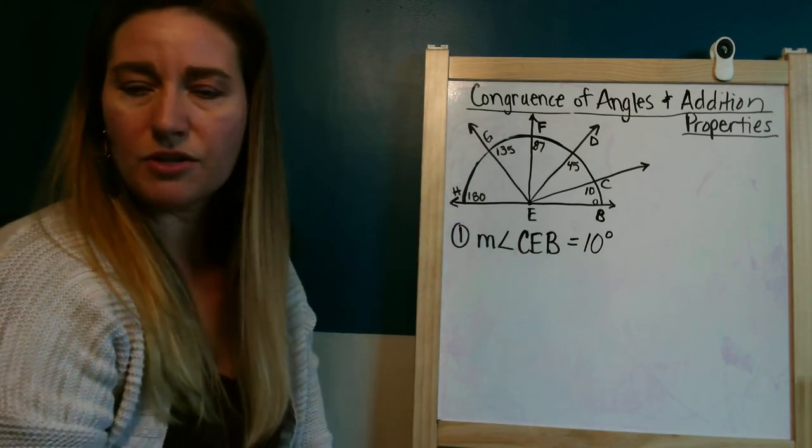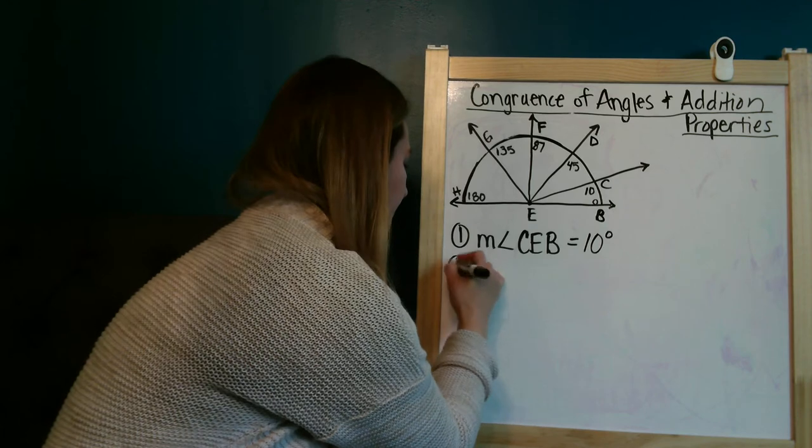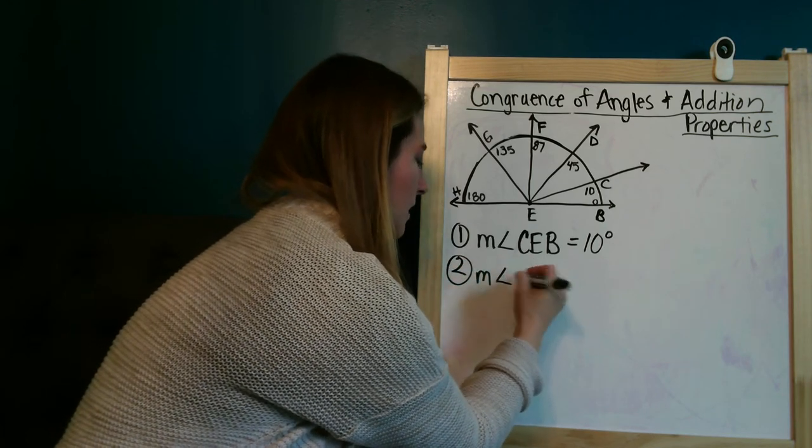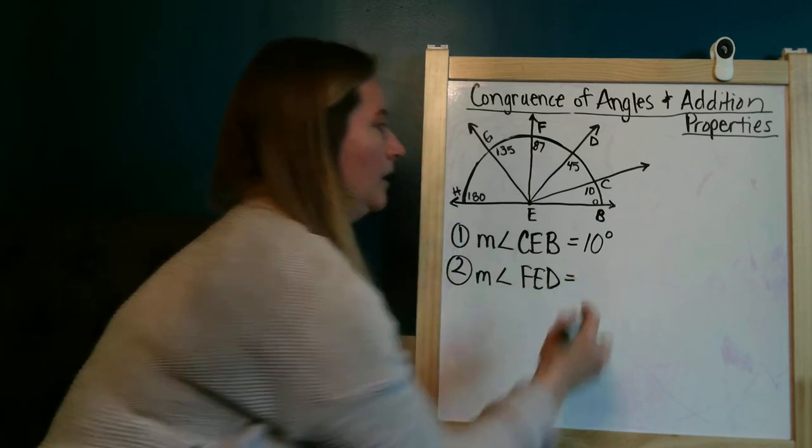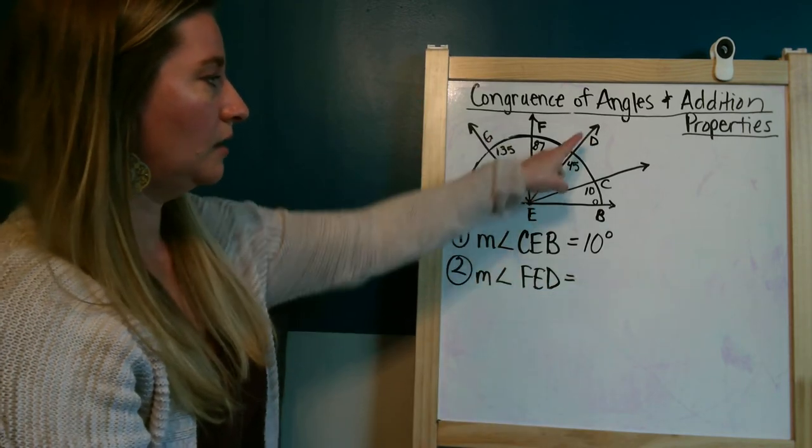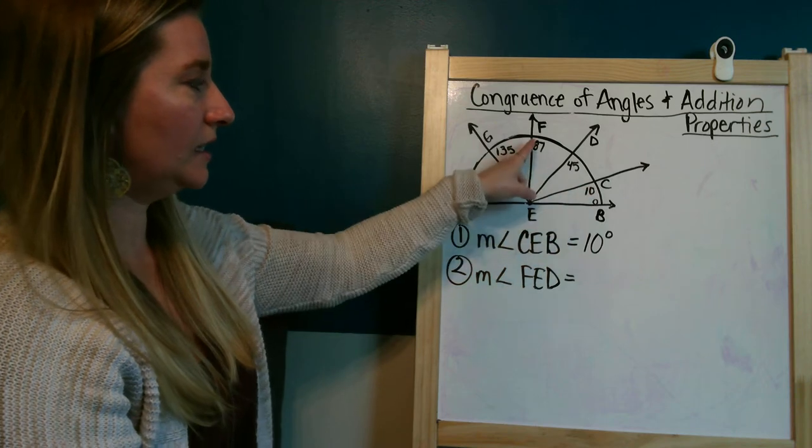Number two says the measure of FED. So the measure of angle FED. And if I look at FED, that says it's 87 degrees.